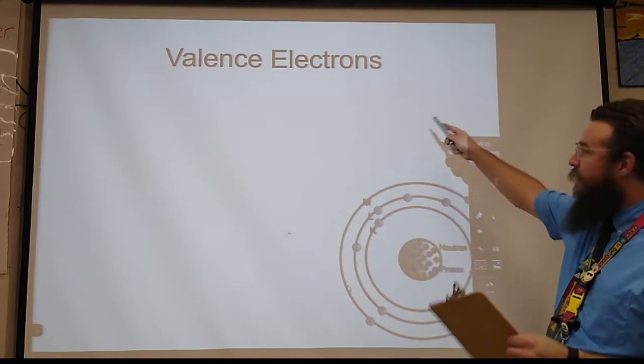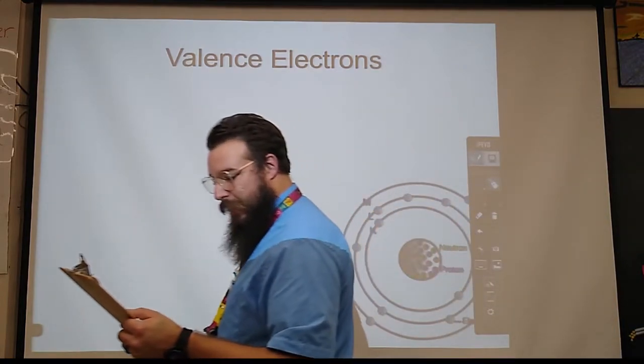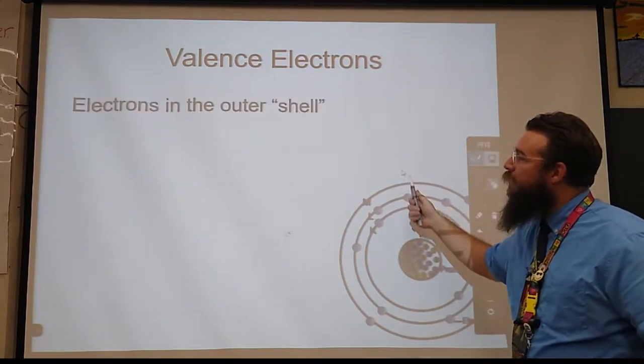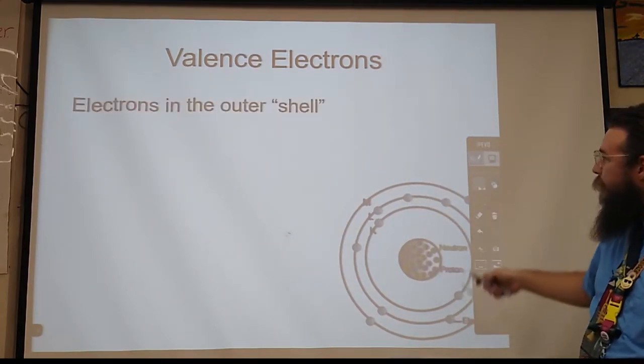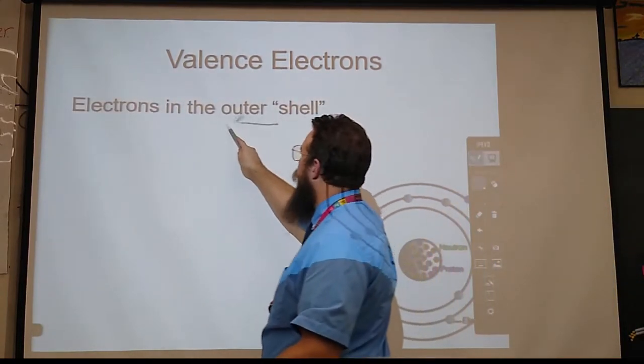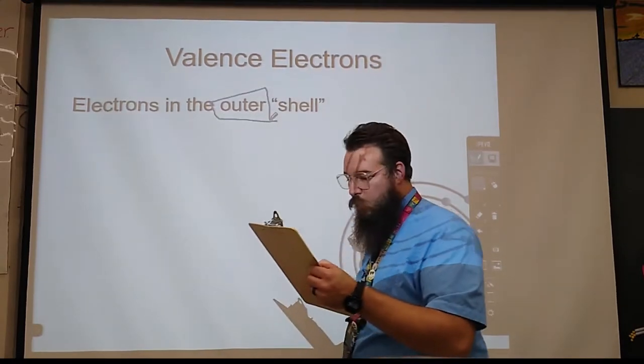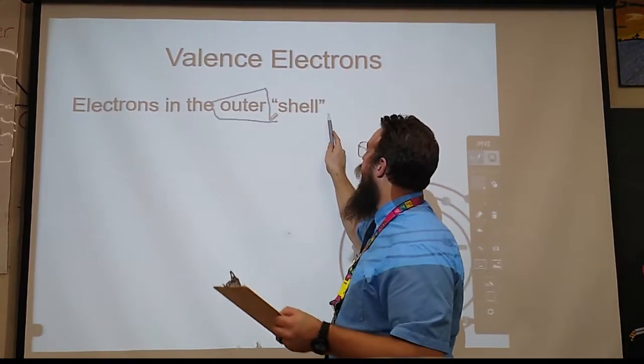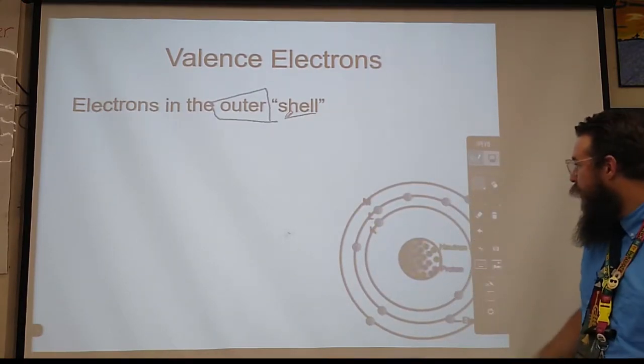Notice I said valence electrons, and that's our next blank. The valence electrons are the electrons found in the outermost shell or outermost orbital. So the outer orbital or outer shell of an atom, that's where we find the valence electrons.